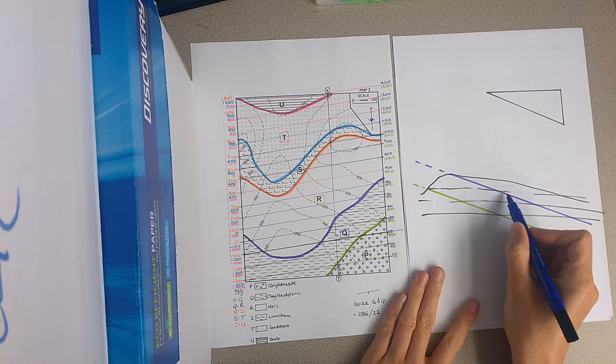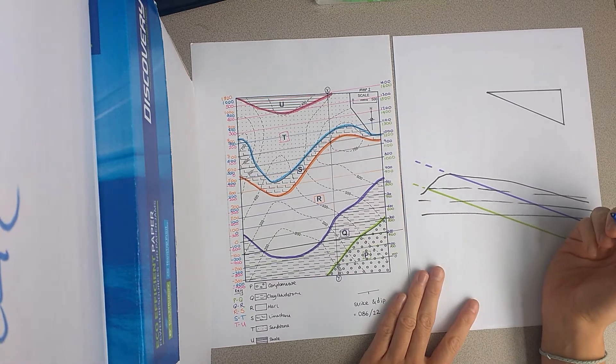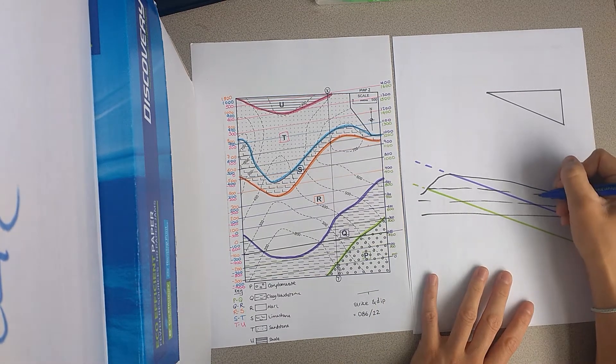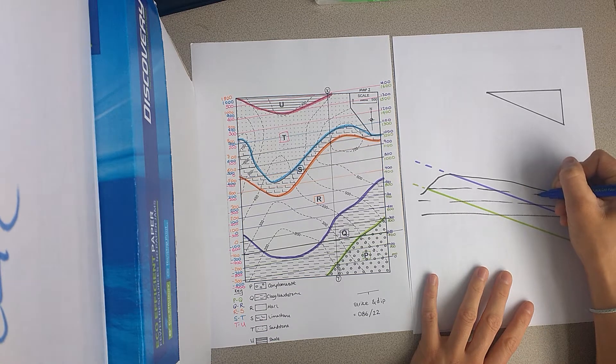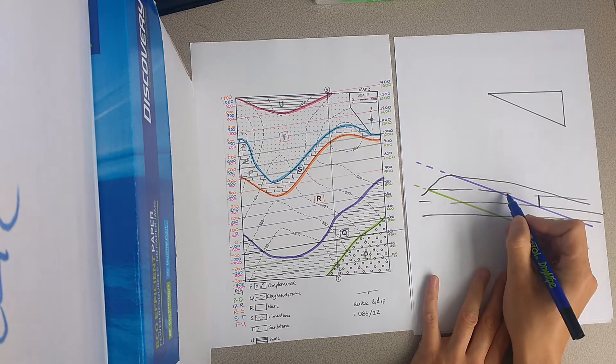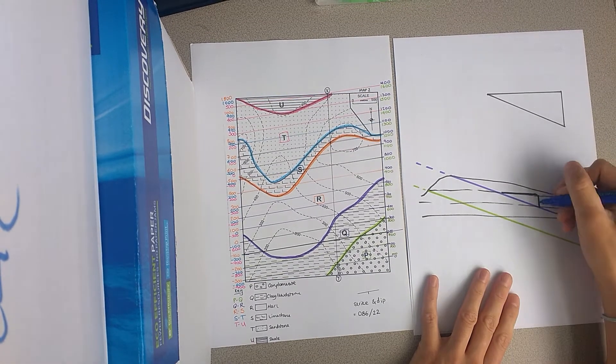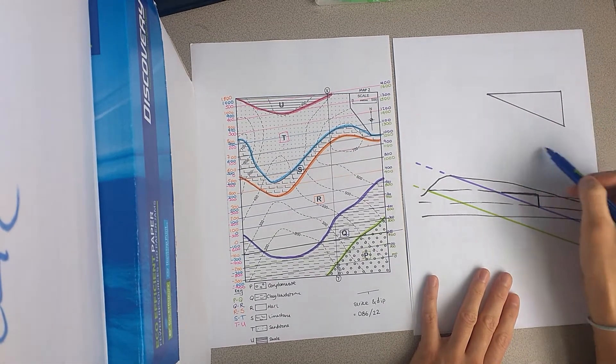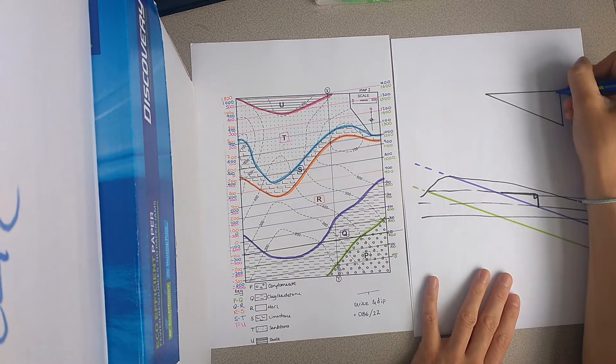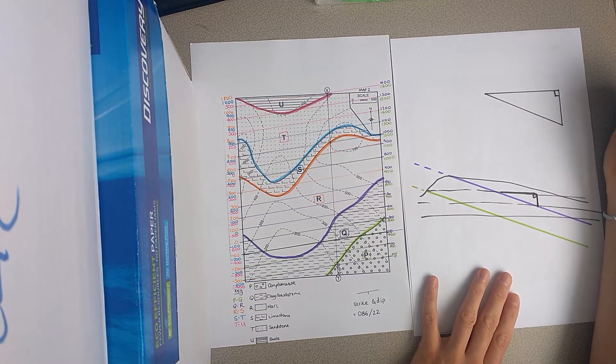Alright, so if we want to work out the dip on this, what we're going to do is we're going to look at the vertical distance between the structure contours and the horizontal distance. And then we're going to use trigonometry to work out the dip, because that forms a right angle triangle.